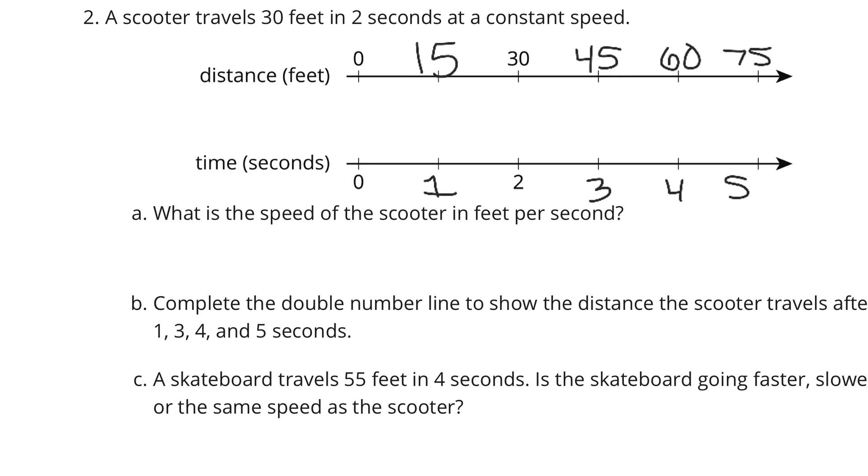And then a skateboard travels 55 feet in 4 seconds. Is that going faster, slower, or the same speed? Well, the skateboard was going 55 feet in those 4 seconds. Our scooter is going 60 feet in those 4 seconds. If we take a look at our double number line here, 60 feet in those 4 seconds. So the skateboard is slower, as it only travels 55 feet in the 4 seconds where the scooter traveled 60 feet.